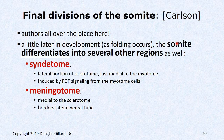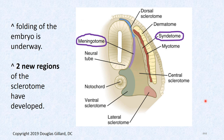Authors are all over the place here; Carlson is the most thorough. The syndetome is the lateral portion of the sclerotome just medial to the myotome — FGF induces these cells to morph into specific tissue. The meningiotome is really the medial portion of the sclerotome — some authors keep calling it that, while Carlson breaks it into a specific tissue because different genes are turned on there, giving rise to the meninges.